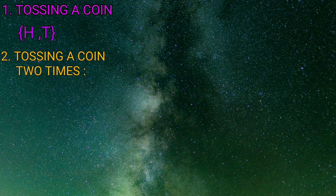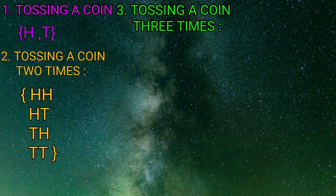Now we have a few important outcomes of random experiments. Number one: tossing a coin once — the results are H and T. Number two: tossing a coin two times or two coins tossed simultaneously — the results are HH, HT, TH, and TT.